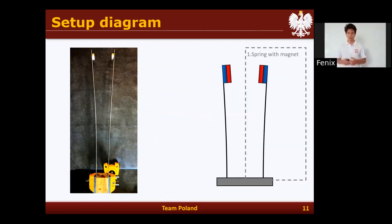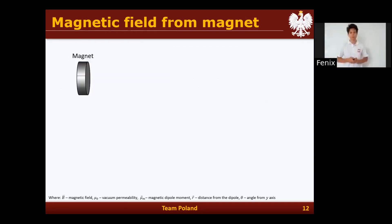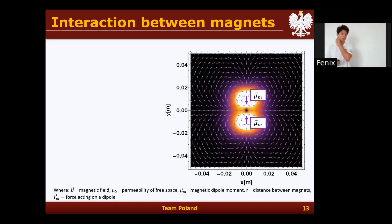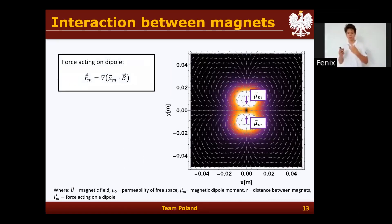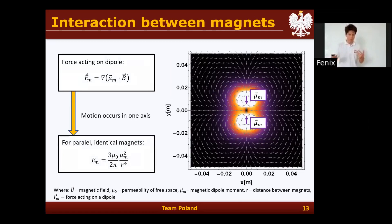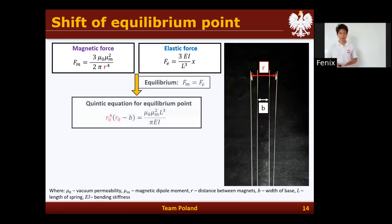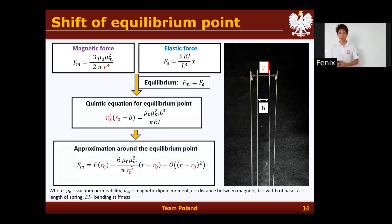Once we have the spring and the magnet done, we can investigate the magnetic interactions. We model our magnets as magnetic dipoles and use the following field equations to describe the field at any point in space around the magnet. We can then find the force acting between the magnets, and assuming the magnets are parallel and the motion is along the same axis, we get the formula for force between the magnets depending on the distance. An important parameter in this problem is the equilibrium point, which we find by balancing the magnetic force and the elastic force, yielding a quintic equation describing its position.